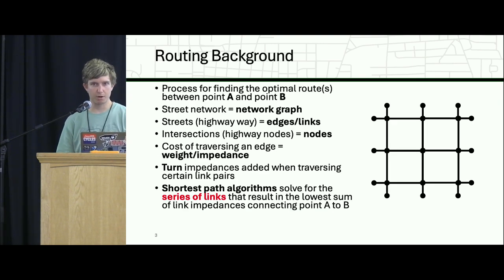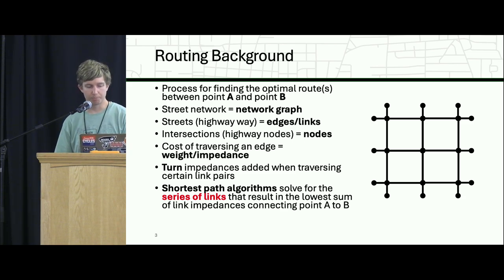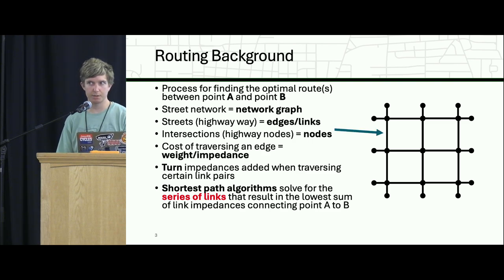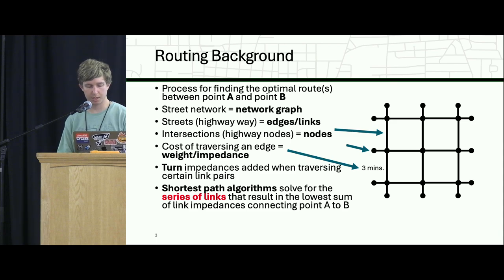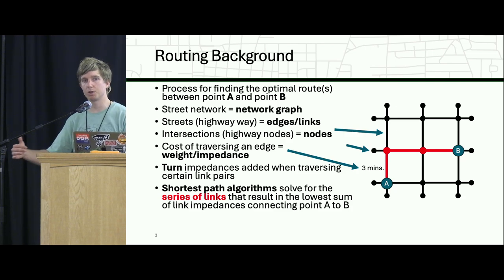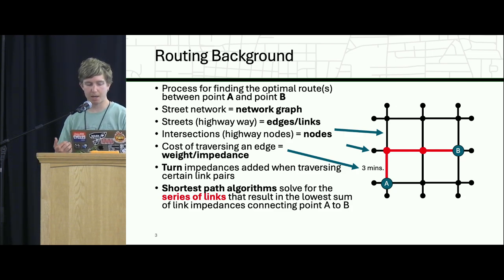Starting with the routing background: routing is just the process of finding the optimal route between point A and point B. We look at street networks as network graphs where the streets are edges — I'm going to refer to them as links — and the intersection ends are nodes. There's a cost of traversing links that is often represented as time, but in this case I used minutes. And there can also be turn impedances, so if you're going from one street to another and it's a left turn, you can add in an additional impedance for that. The shortest path algorithms solve for a series of links that connects point A and point B.